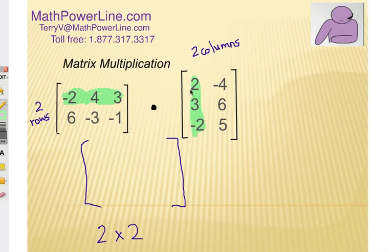So these numbers here in the first row get matched up with the numbers here in the first column. Now it's a matter of multiplying and adding. Now watch, and I think you'll get it. What we're going to do is take negative 2 times positive 2, and that's negative 4. We're going to take 4 times 3, and that's 12. Add it together. We're going to take 3 times negative 2, and that's negative 6. So we're going to do a little bit of arithmetic here to get the very first element in our answer column.